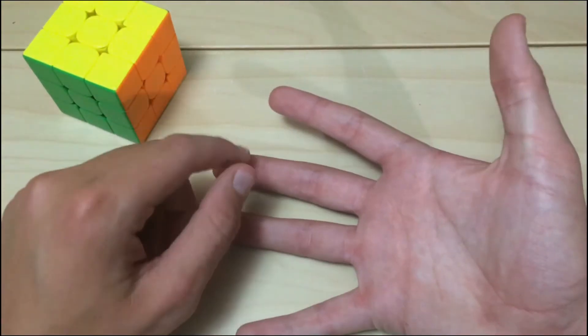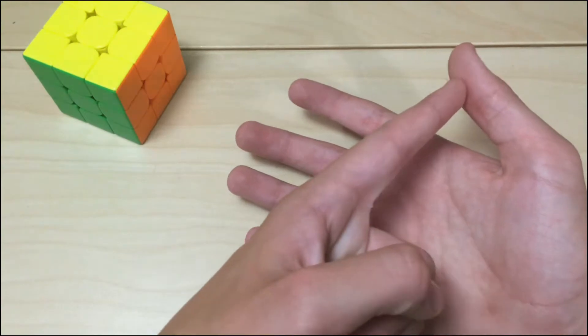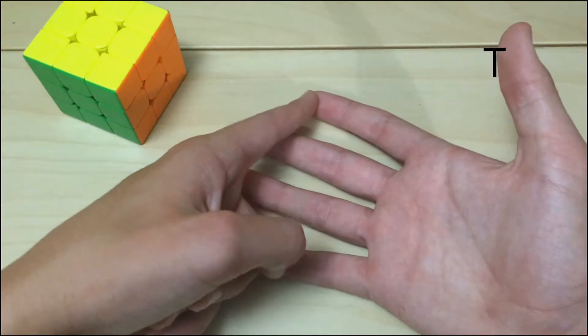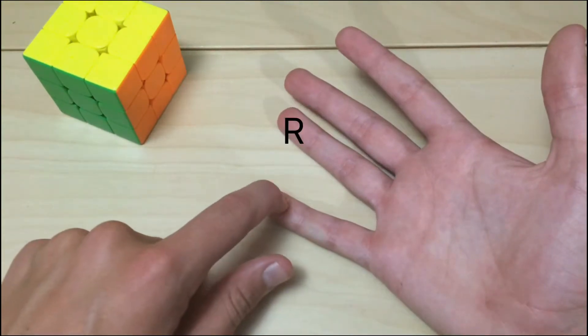For the fingers, we assign each finger a different letter. So for thumb, it's T. Pretty easy. Index, I. Middle, M. Ring, R. Pinky, P.